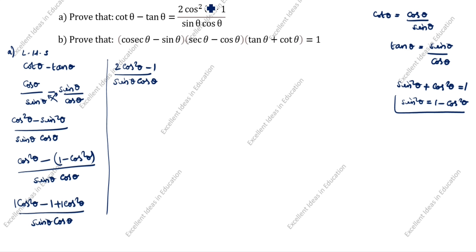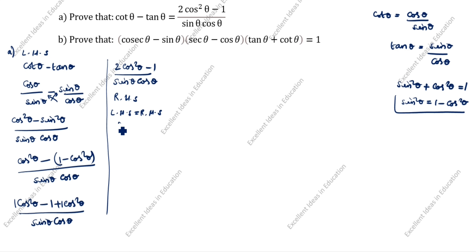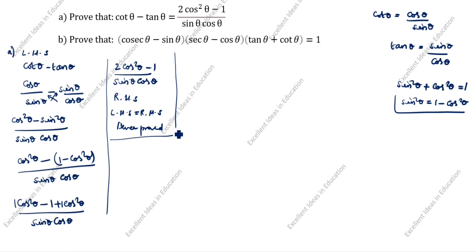Sin θ cos θ. You see this is the RHS. The answer comes here — this is RHS. LHS equals RHS. Hence proved. This is the first question.